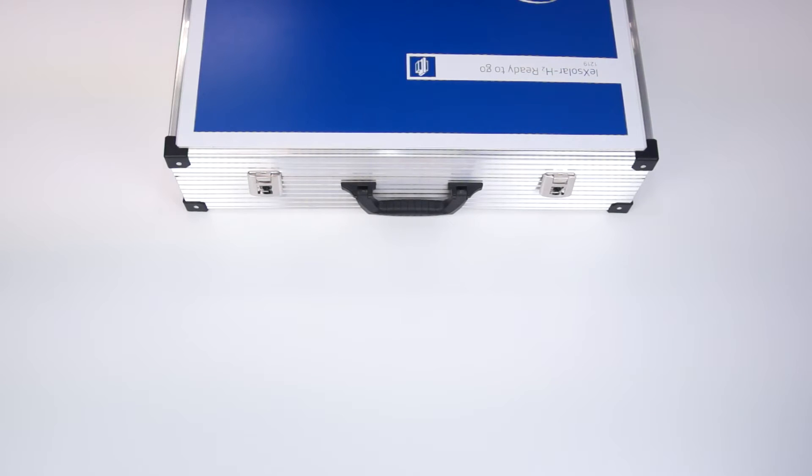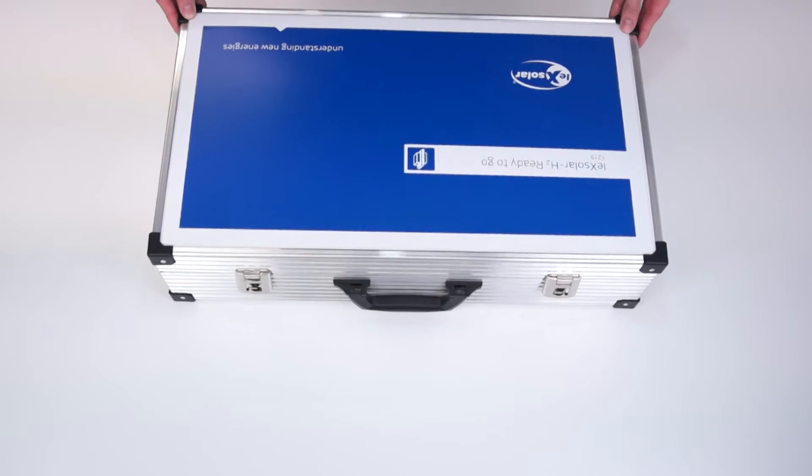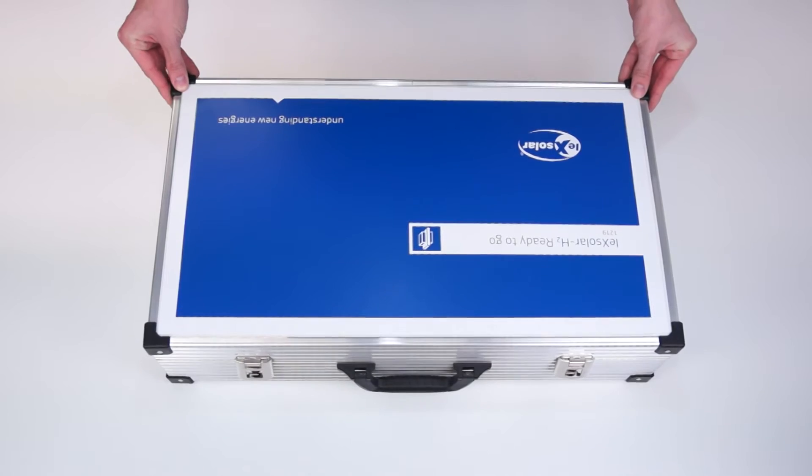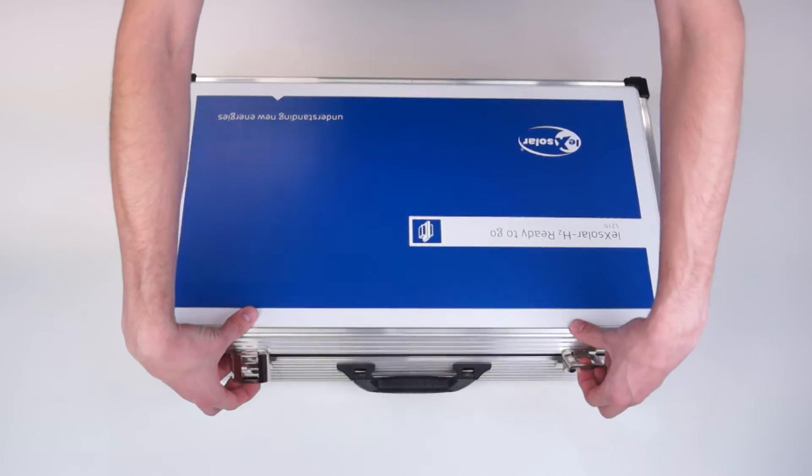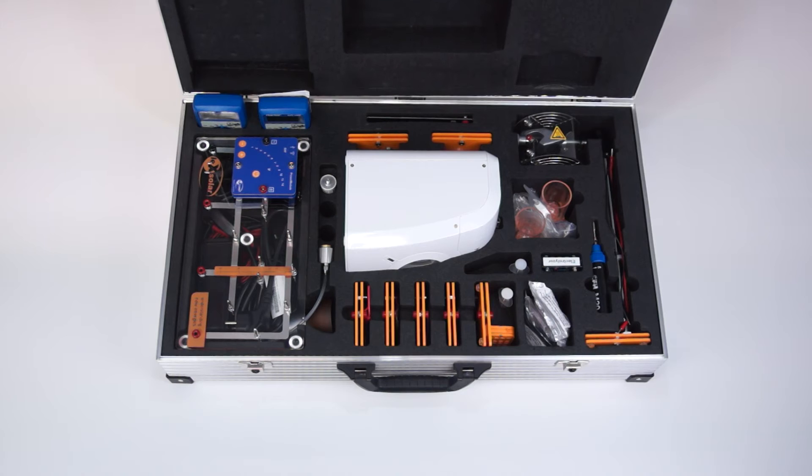This is the Lex Solar H2 Ready to Go, our system for experimental research into various fuel systems for secondary education levels 1 and 2. The devices are clearly laid out in the suitcase for safe and easy transport.